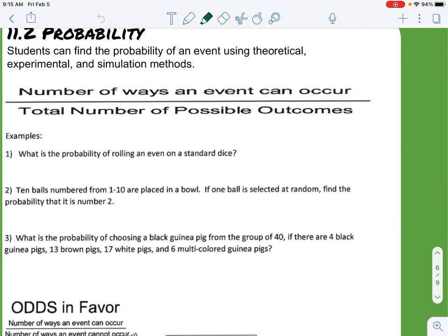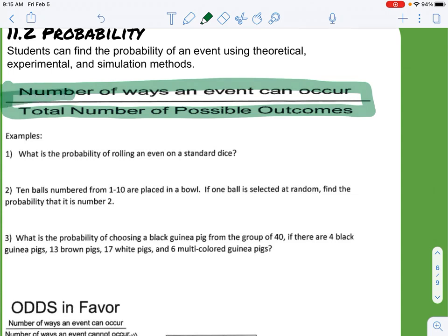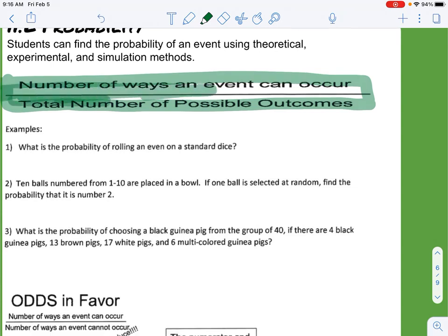You'll notice here we have this big fraction. It says total number of ways an event can occur and total number of possible outcomes. This is the fraction you can think of when doing probability. Number of ways an event can occur over total number of possible outcomes.